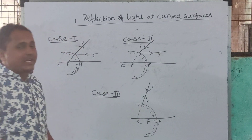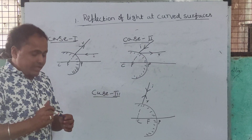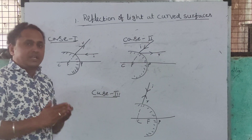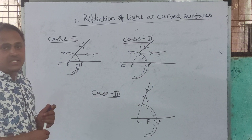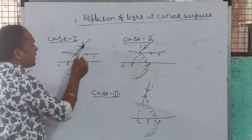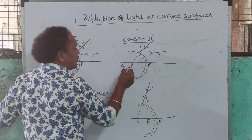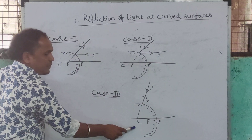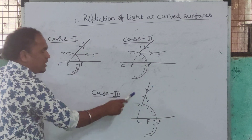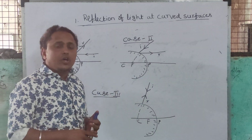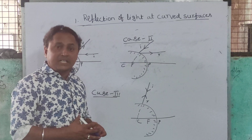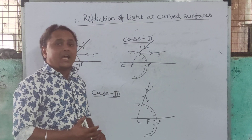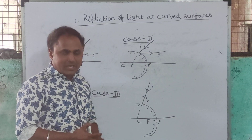Today I explained reflection of light at curved surfaces — ray diagrams for concave and convex mirrors, the relation between focal length and radius of curvature, and three cases: incident ray parallel to principal axis gives reflected ray through focus; incident ray through focus gives reflected ray parallel to principal axis; incident ray through center of curvature gives reflected ray in the same path but opposite direction. Tomorrow I will explain ray diagrams in detail, sign conventions, mirror formula, problems, and a lab activity.